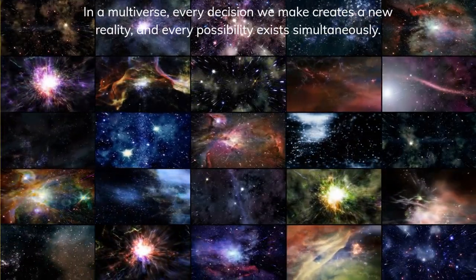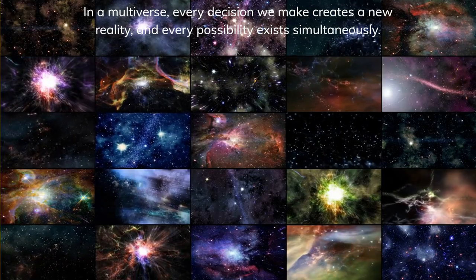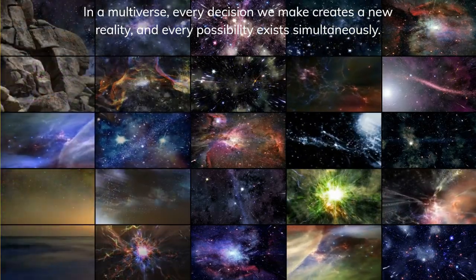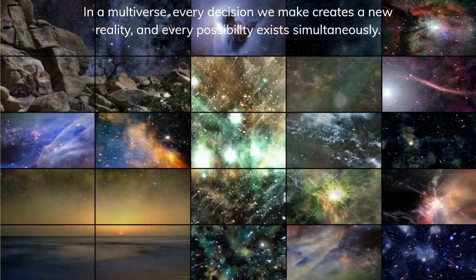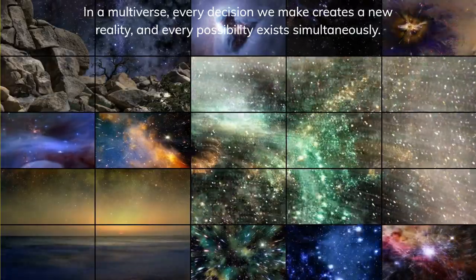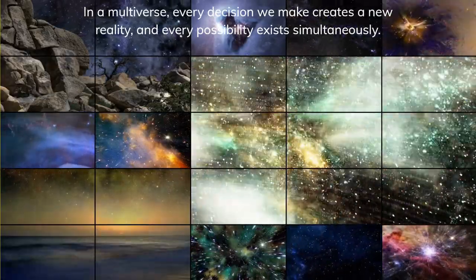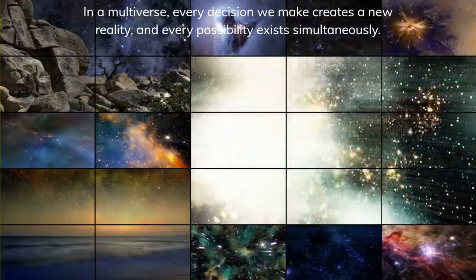In the 20th century, the physicist Hugh Everett III proposed the many worlds interpretation of quantum mechanics, which suggests that every time a quantum event occurs, the universe splits into multiple branches, each representing a different outcome of the event. This idea became the foundation of the modern multiverse theory.